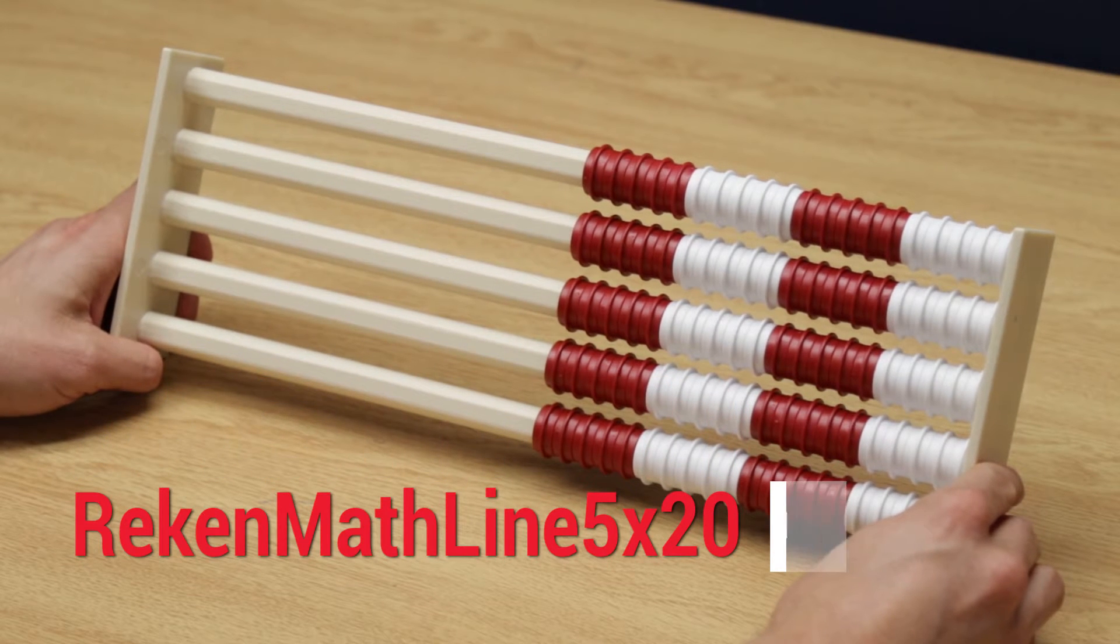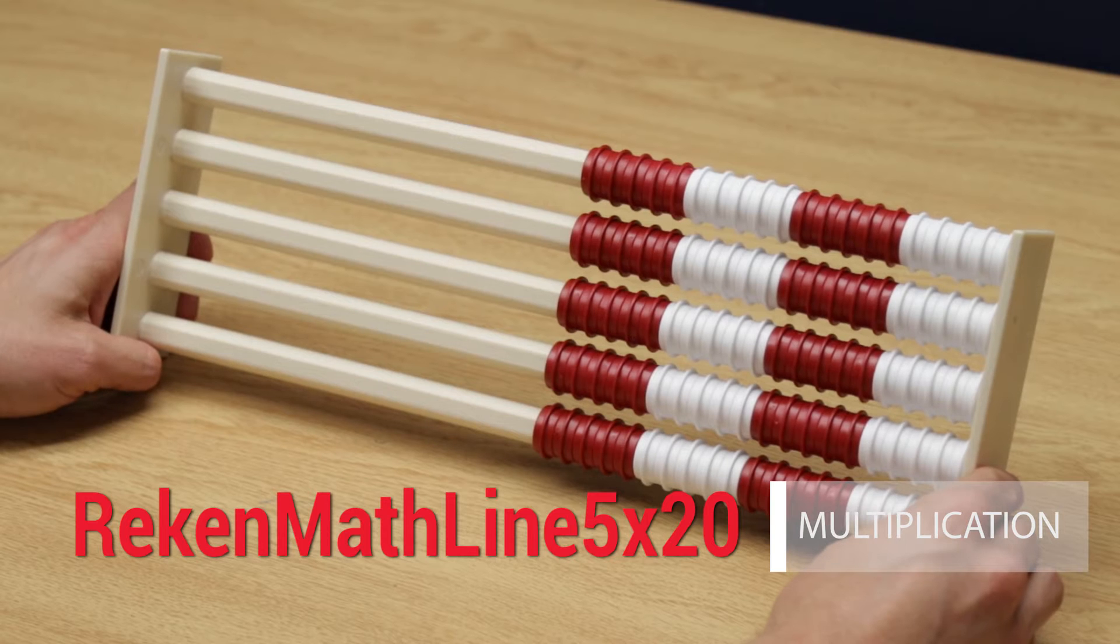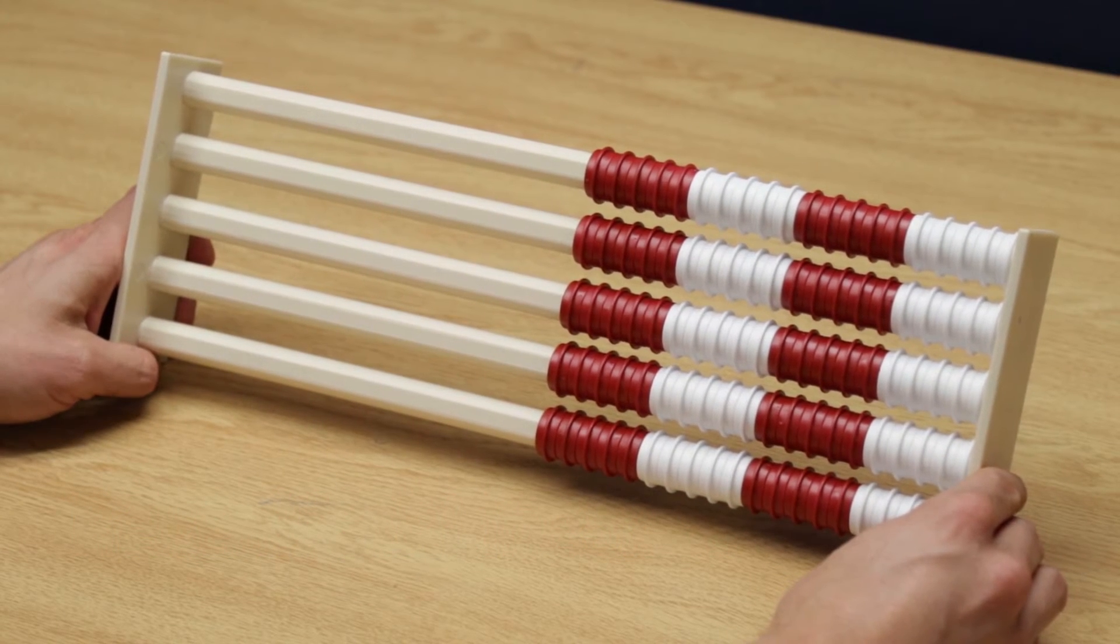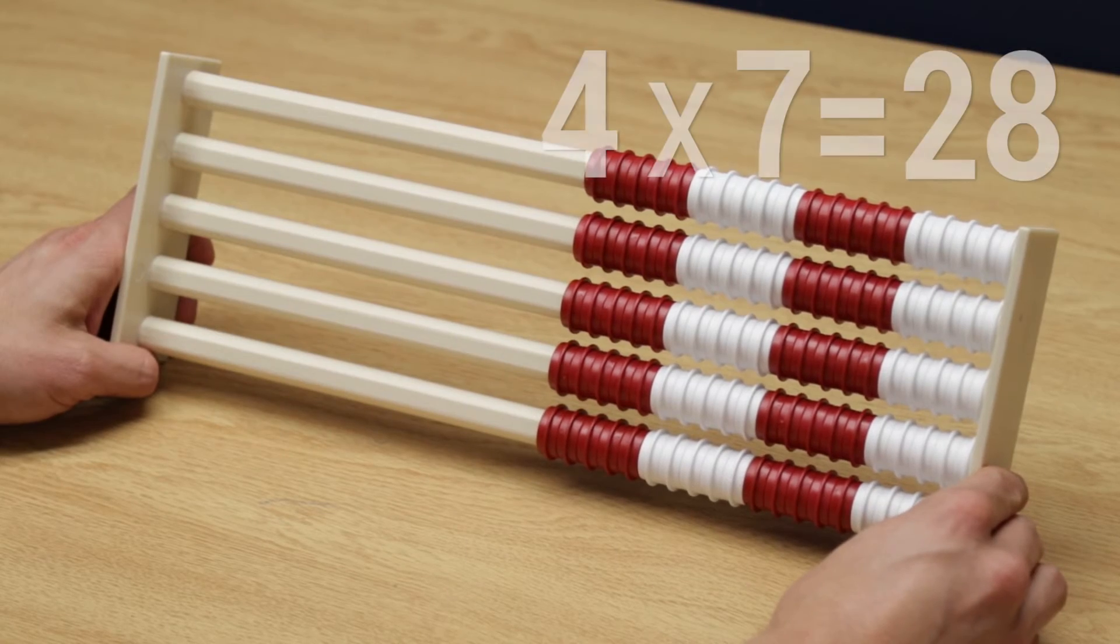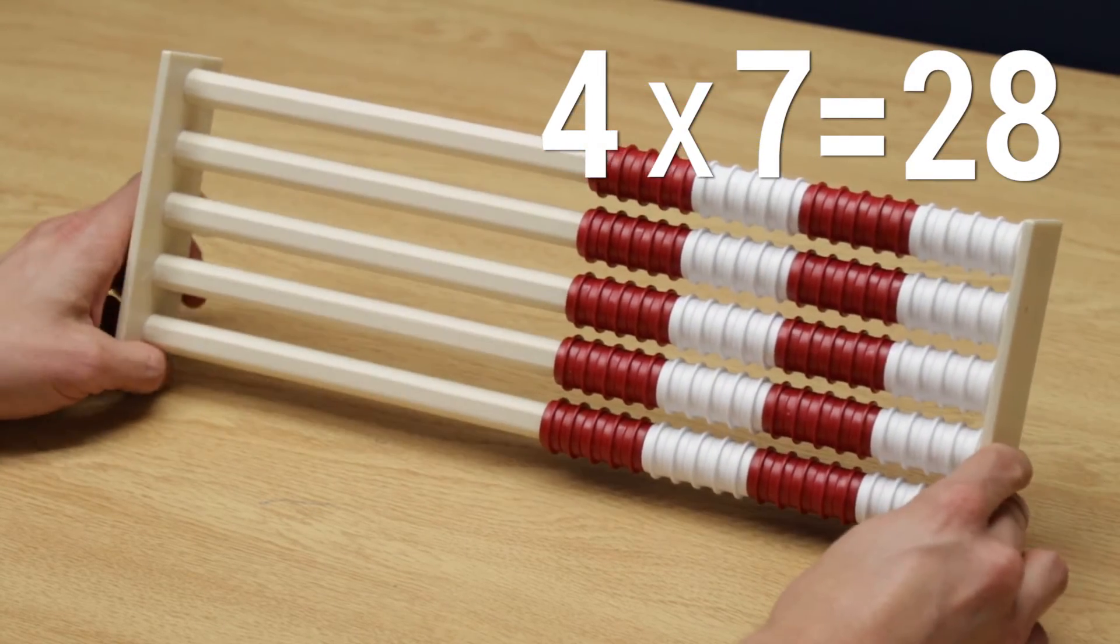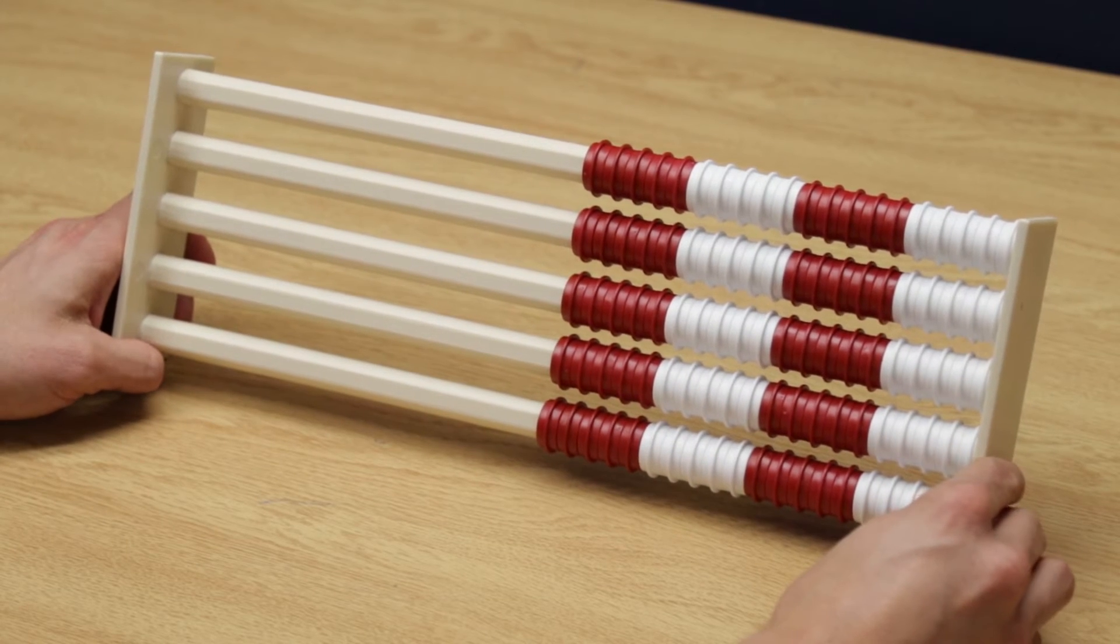ReckonMathLine 5x20 is great for multiplication and division. Let's start with conceptual multiplication. What if we're teaching the concept 4x7? We can start on the ReckonRec side. So 4x7 is 4 groups of 7.